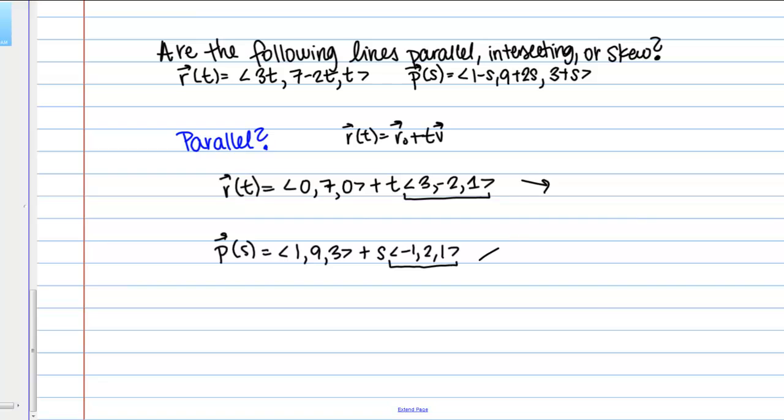If we just take those and write them side by side, these two direction vectors. I've got ⟨3, -2, 1⟩ and ⟨-1, 2, 1⟩. I wanted to determine if these vectors are parallel. Once again, what I said before is that if they're parallel, they should either be the same vector or scalar multiples of each other. Is that the case here? Well, if I look at the z components of these two vectors, both of the z components are 1. Then if they were going to be parallel, all the other components should be the same as well, and they're not. These vectors aren't the same, and they're not scalar multiples of each other, so then these lines are not parallel.